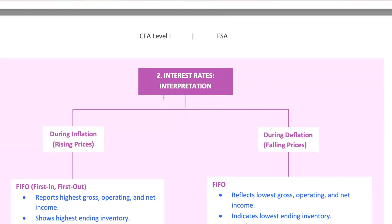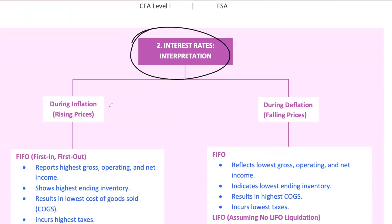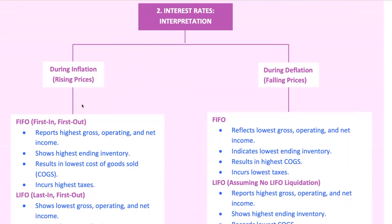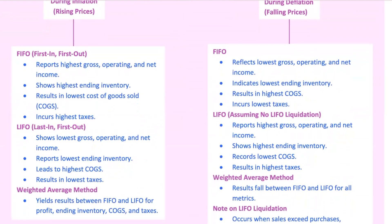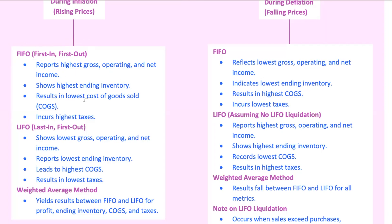Let's dive into how economic conditions like inflation and deflation can have a significant impact on inventory valuation. The method a company uses to value its inventory can lead to vastly different financial results depending on whether prices are going up or down. During inflation, when prices are rising, the inventory valuation method can really affect a company's financials. If a company uses FIFO, first in first out, it assumes that the oldest — usually the cheapest — inventory is sold first.